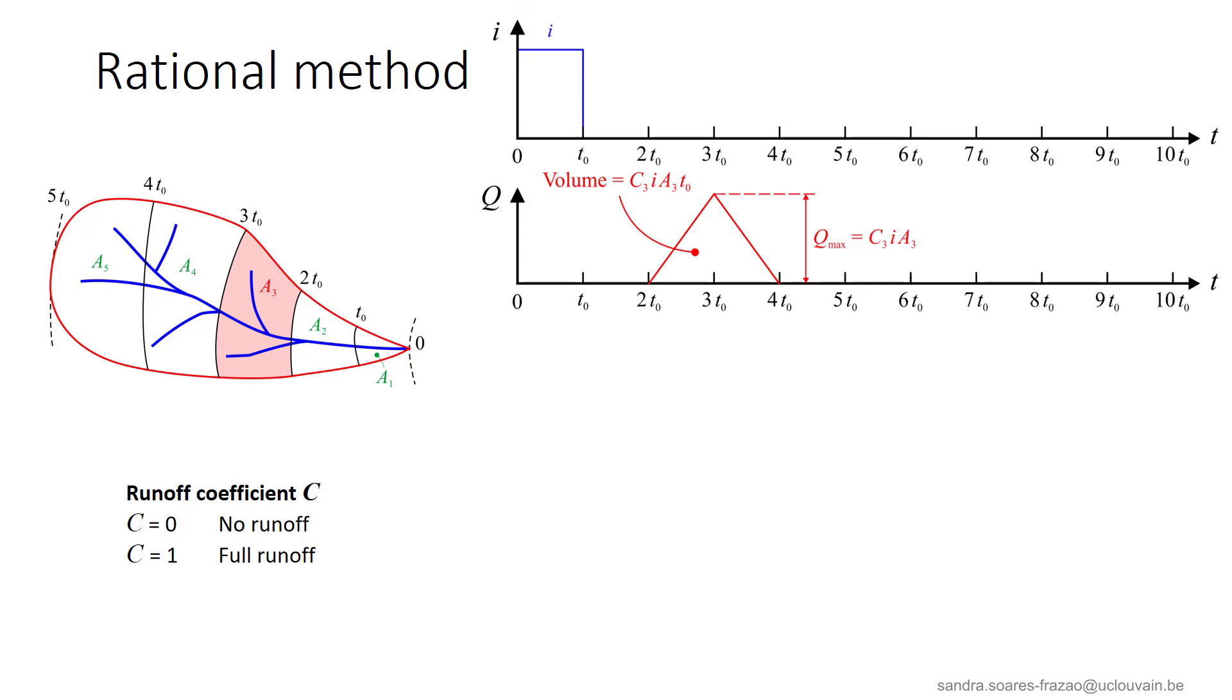The maximum discharge occurs at time 3 T0, when the whole subcatchment contributes to the outflow. So, this maximum discharge is C3 I A3, in such a way that the volume of the triangle here is indeed C3 I A3 T0.